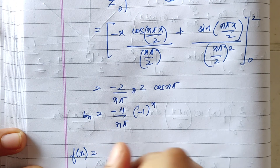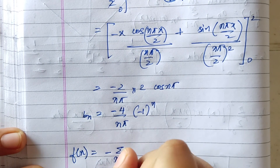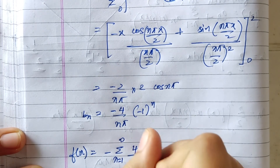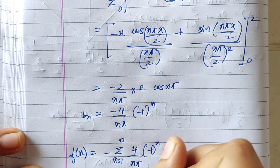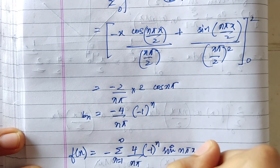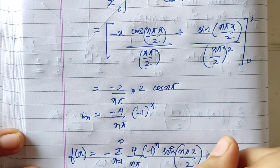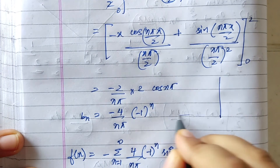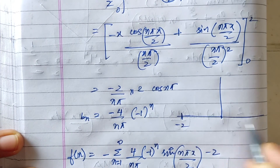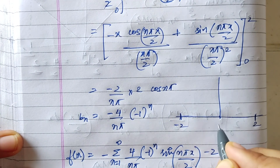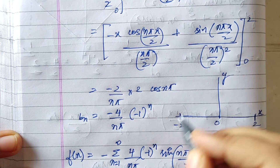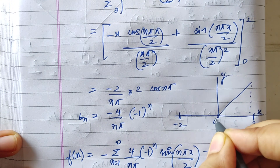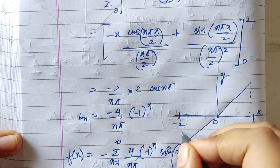So our f(x), substituting the values, is equal to summation of n equals 1 to infinity of [4 divided by (n pi)] times (minus 1) to the power n times sin(n pi x / 2), with a minus sign. And for the graph, we will again get it from minus 2 to 2 on the x-axis and y-axis.